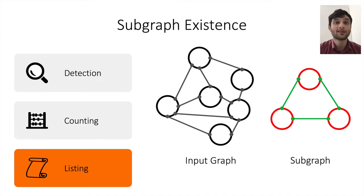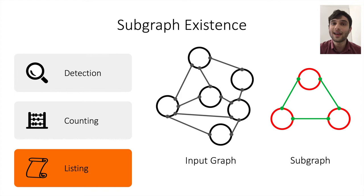In the distributed setting, every single computation node in the graph outputs some list of instances of the subgraph that it sees in the input graph, and the union of all these lists is exactly all the instances of the subgraph in the input graph.